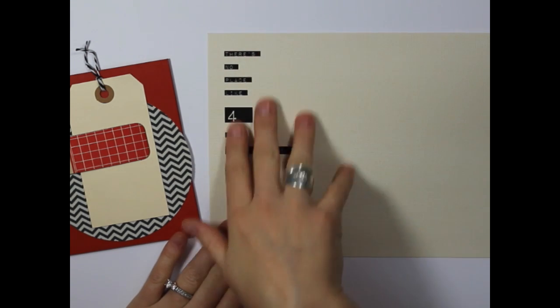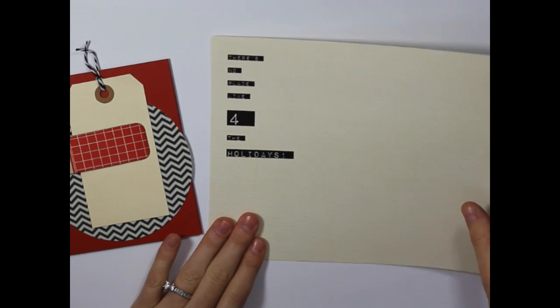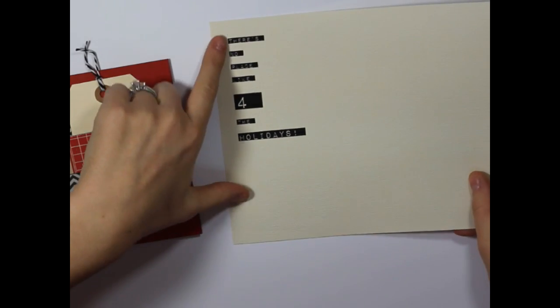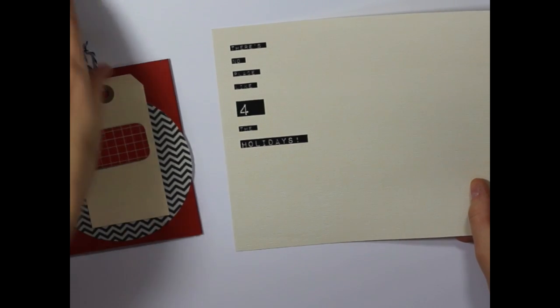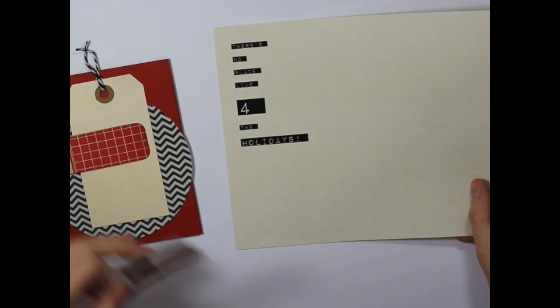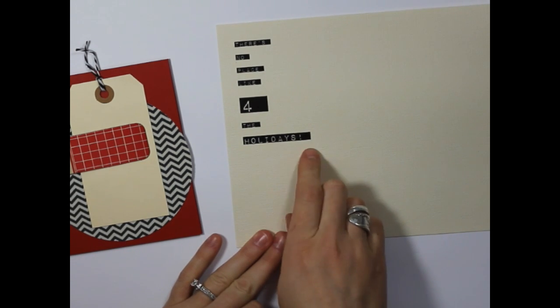So I just typed out the words and printed that directly from my computer. From that point I just trimmed around each of the words of the sentiment, leaving a very small cream border around the edges. I liked this font because it does look like an old time label maker.